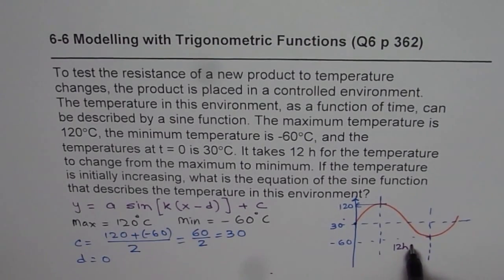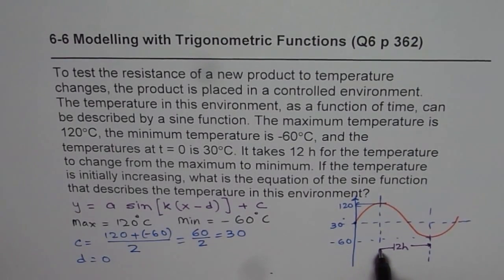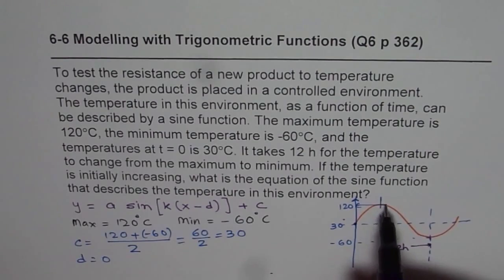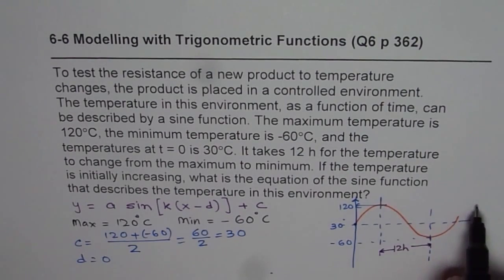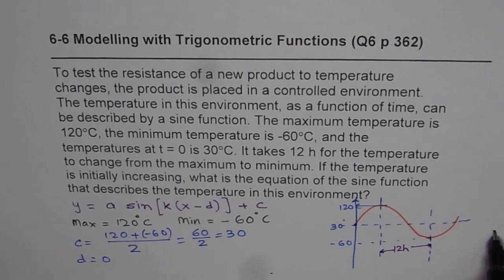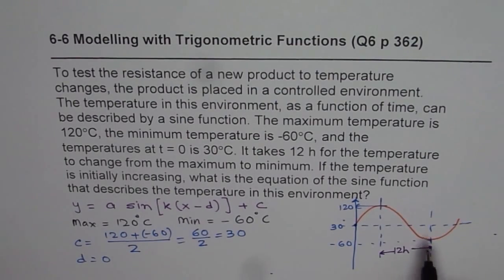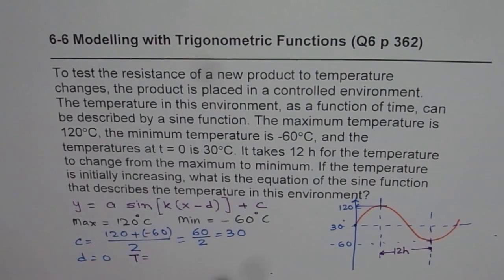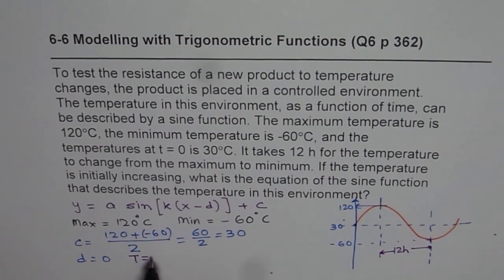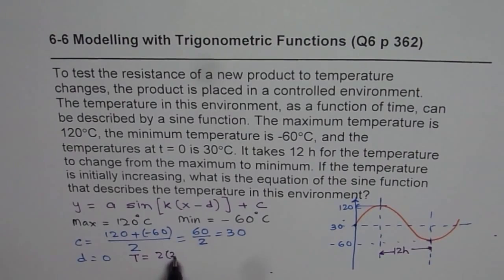Now remember, this is half the cycle. From maximum to minimum is half the cycle. Between two maximums or between two minimums is one full cycle. That means time period for us should be twice 12. So time period will be 2 times 12, which is 24.